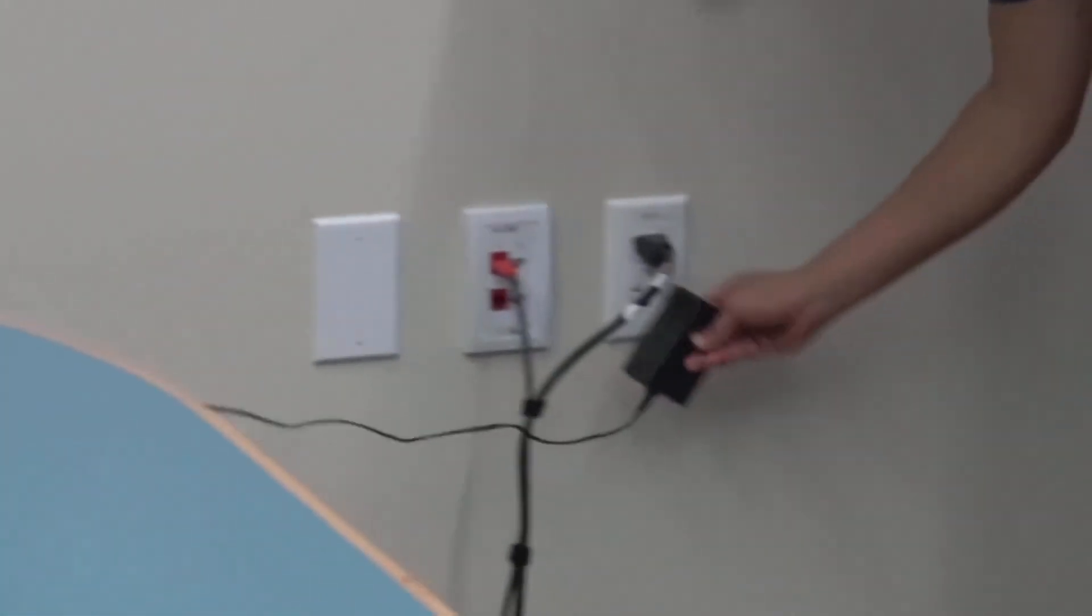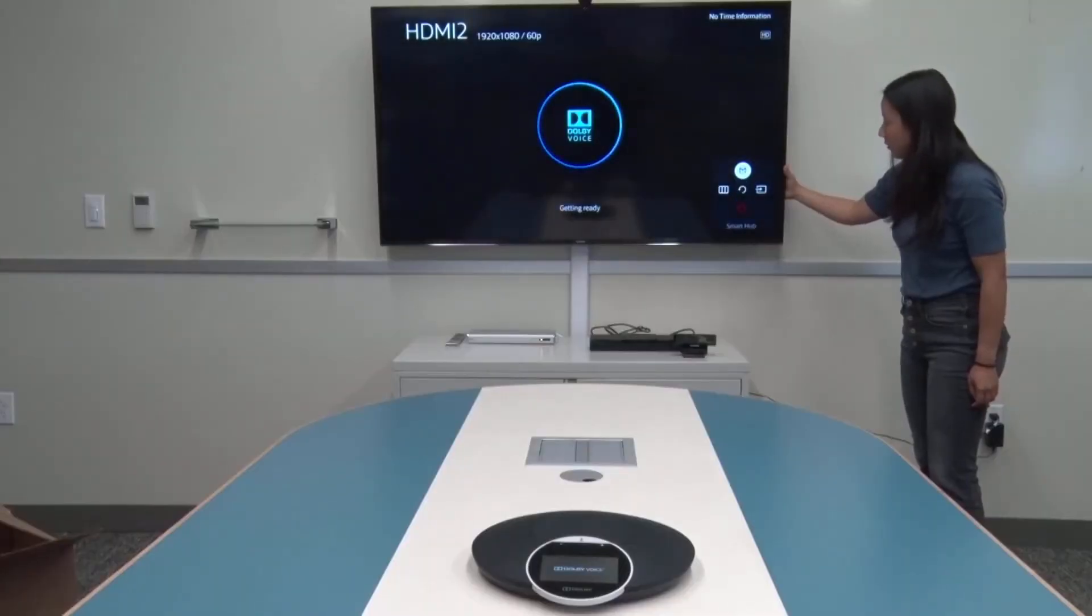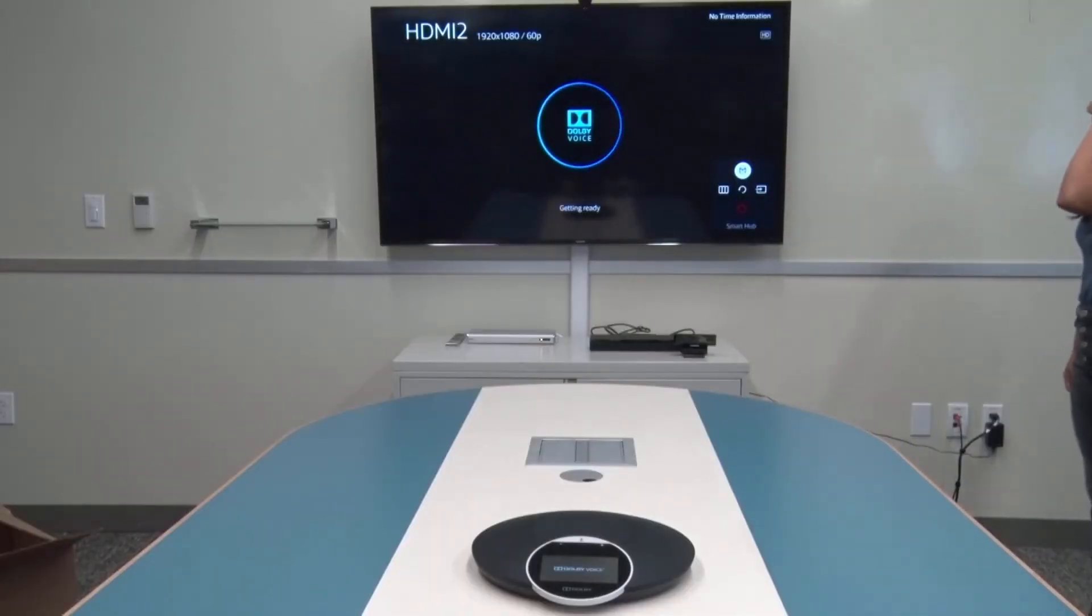Plug the unit into the wall. The system will automatically power on after being plugged in. Be sure to turn on your TV and make sure that it's on the correct input.